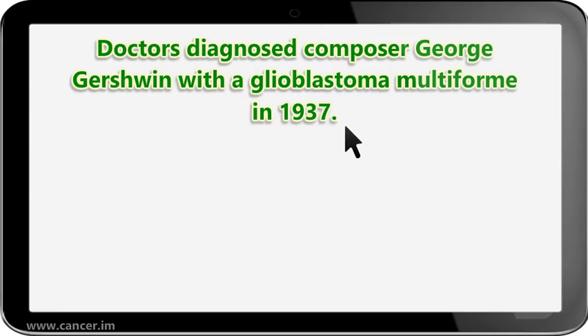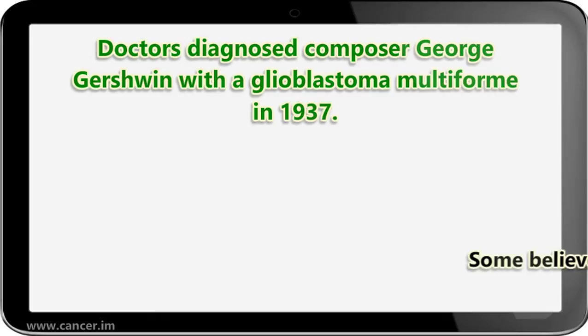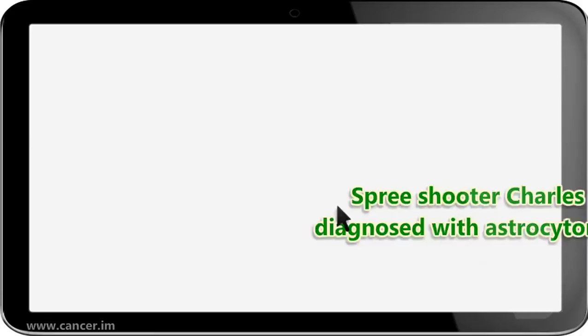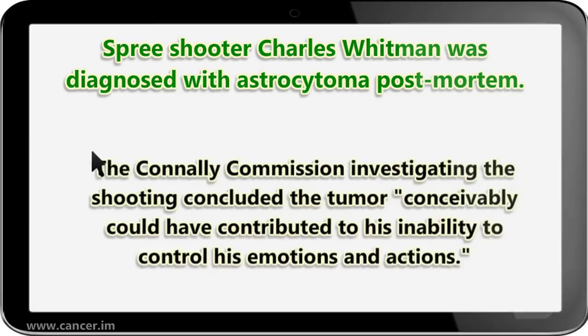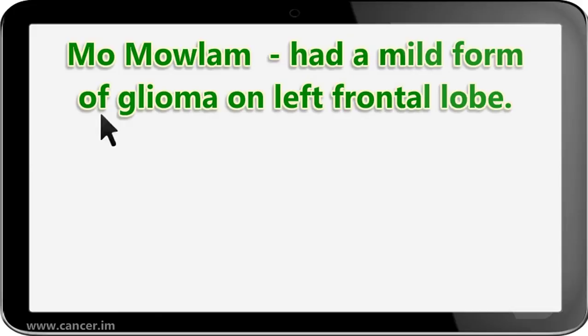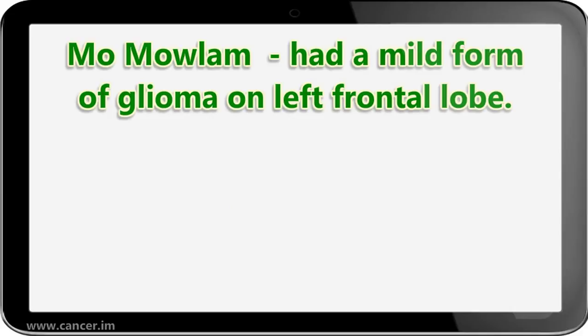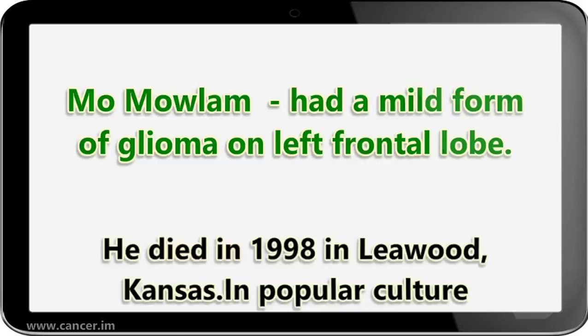Doctors diagnosed composer George Gershwin with a glioblastoma multiforme in 1937; however, recent studies indicate that this diagnosis may have been incorrect, and some believe it may have been a pilocytic astrocytoma. Spree shooter Charles Whitman was diagnosed with astrocytoma post-mortem; the Connolly Commission investigating the shooting concluded the tumor conceivably could have contributed to his inability to control his emotions and actions. Mo Mollum had a mild form of glioma on the left frontal lobe. Dan Quisenberry was diagnosed with grade 4 astrocytoma in January 1998 and died in 1998 in Leawood, Kansas.